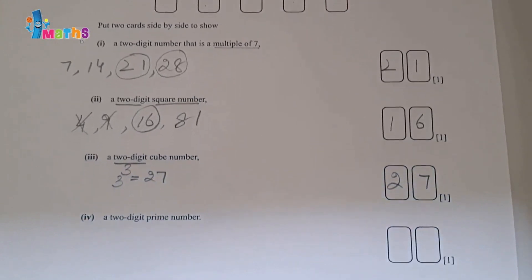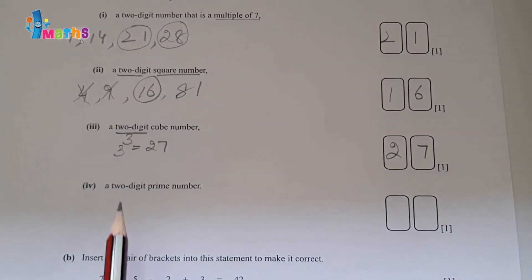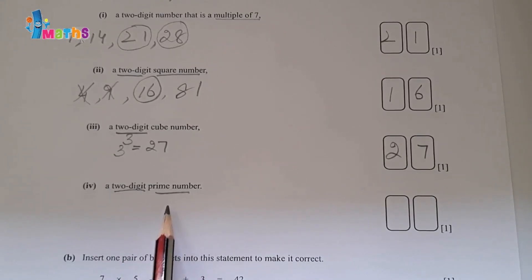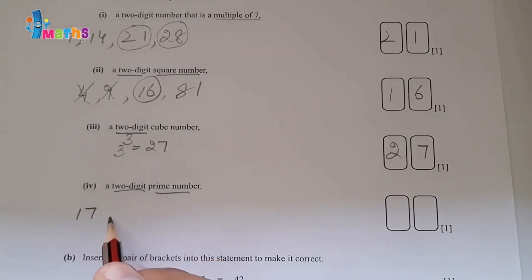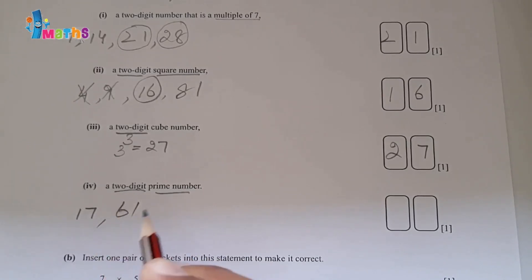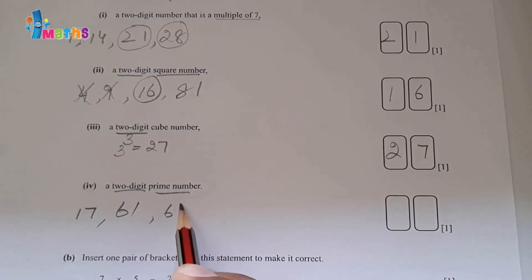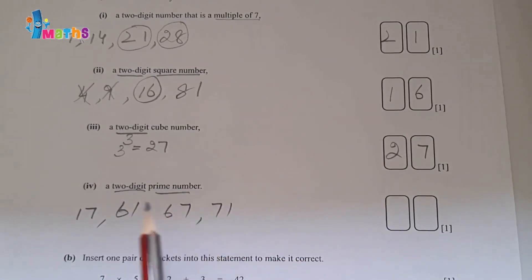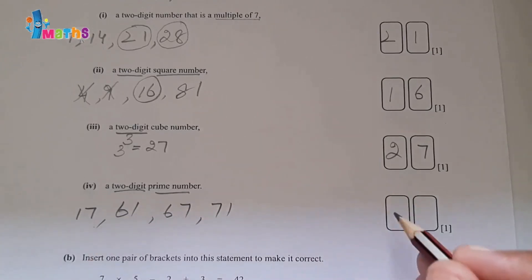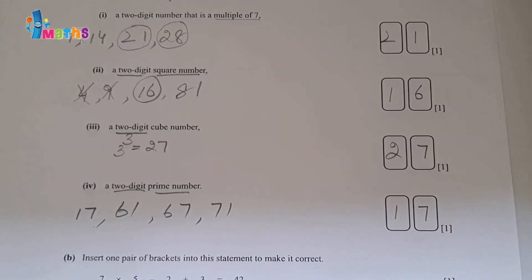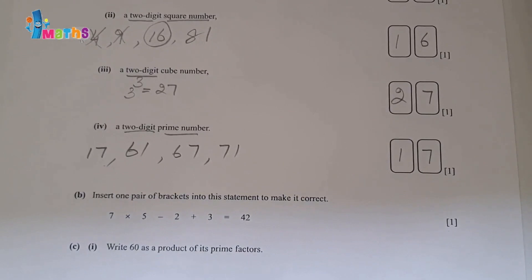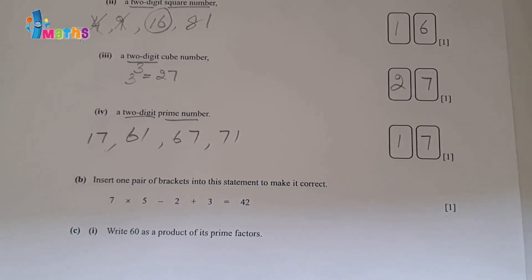Fourth part: a two-digit prime number. Possible answers from the given cards include 17, 61, 67, or 71 — all of these can be made from the provided cards. We write 17 as an acceptable answer.